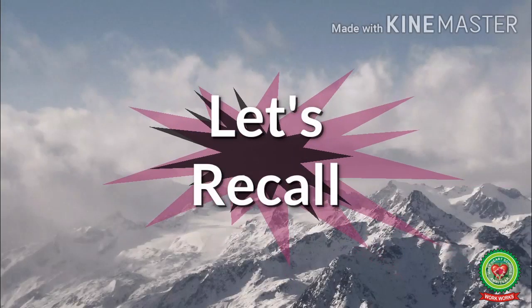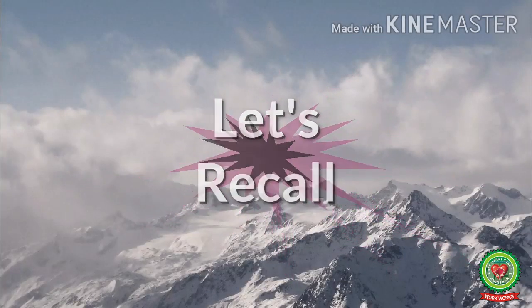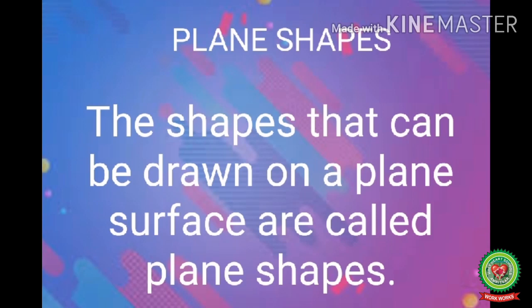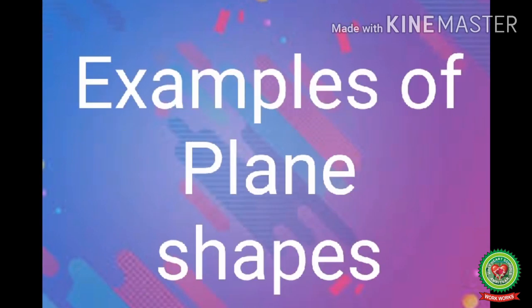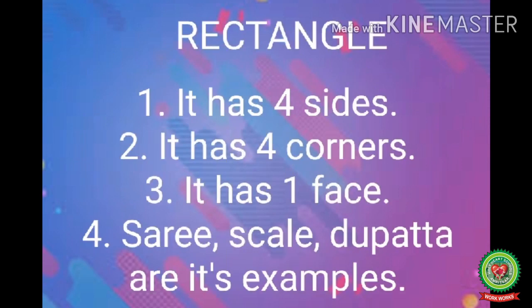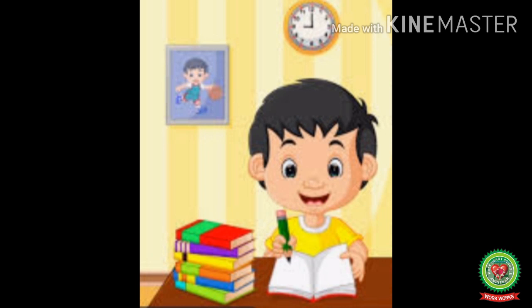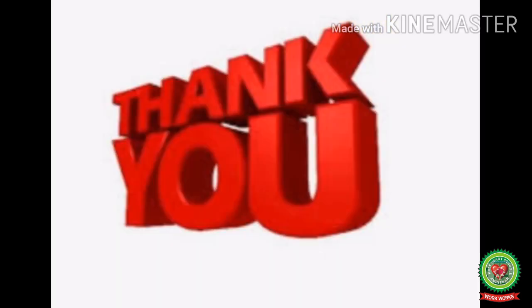Now let's recall what we have learnt today. First, we have revised plane shapes and its examples. Then we have learnt about rectangle that it has four sides, four corners, one face, and saree, scale, and dupatta are its examples. Now children, I hope you all have understood about plane shapes and rectangle, so open your Snap Homework and do your work. Thank you.